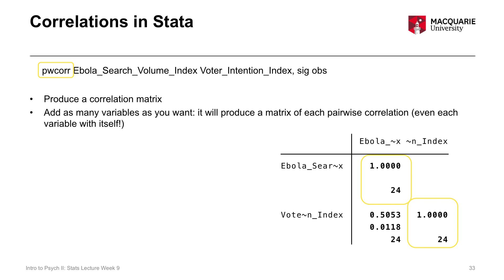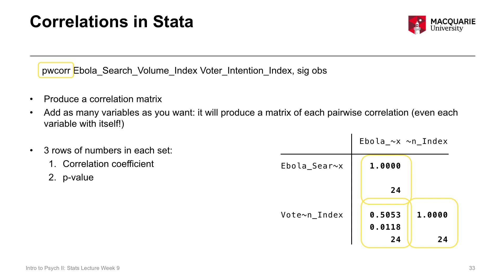What you can see here in the correlation matrix: with two variables we have two columns and two rows. Each variable is listed in a column and a row, and you match up the column variable with the row variable to find their correlation. The boxes highlighted on the diagonal show a correlation of 1 — that's each variable correlated with itself, a perfect correlation that's not useful, so we always ignore those. The one that's actually interesting is the correlation between the Ebola search volume and the voter intention index.